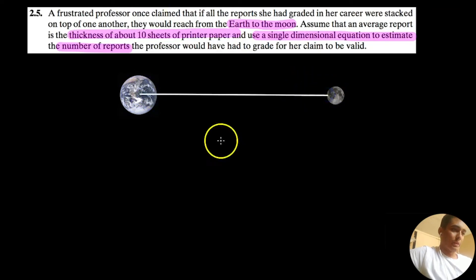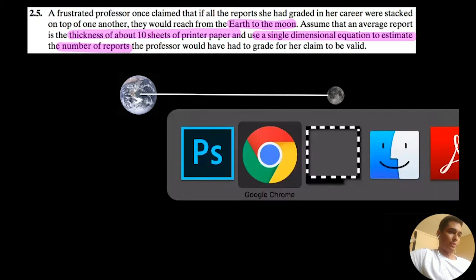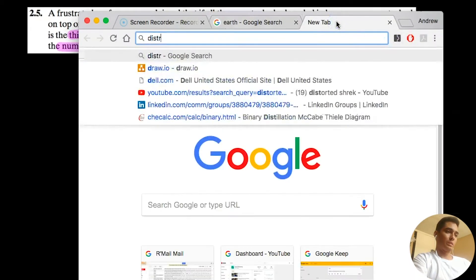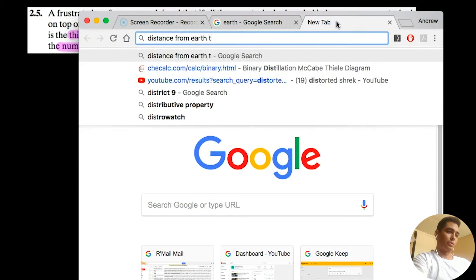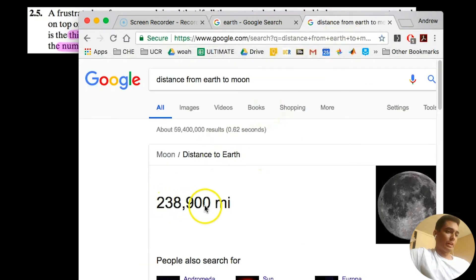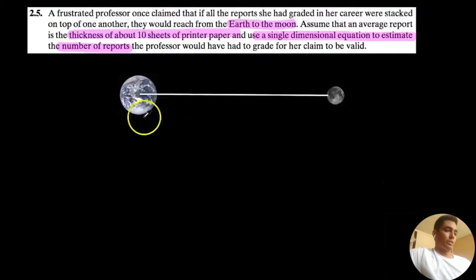So from the Earth to the moon. We got to look up the distance from the Earth to the moon. Good thing it's 2018. Distance from Earth to the moon: 238,900 miles.